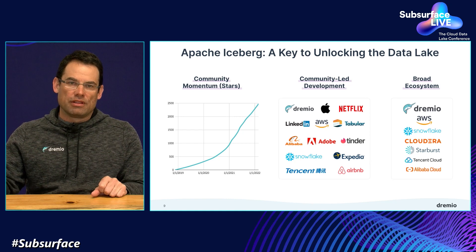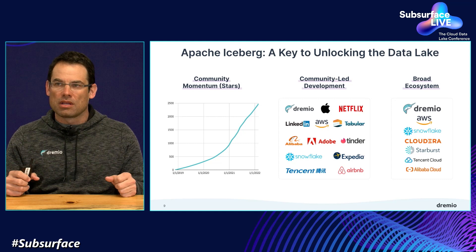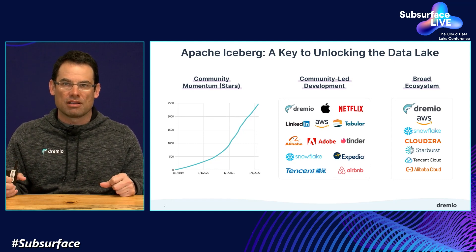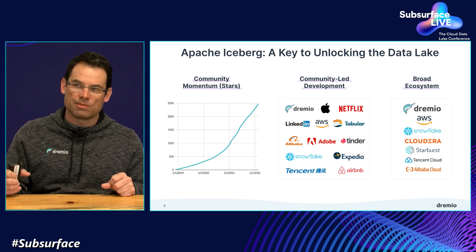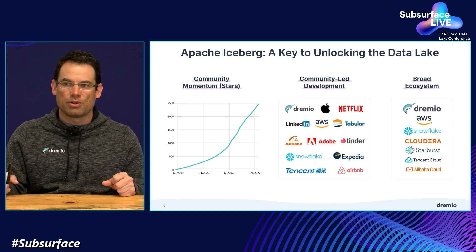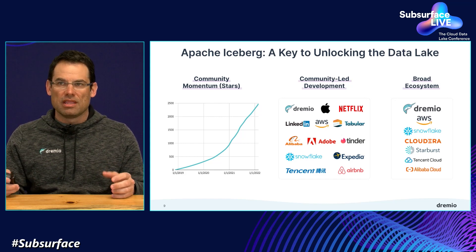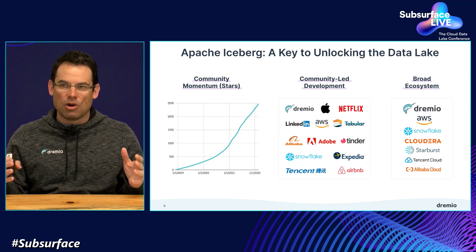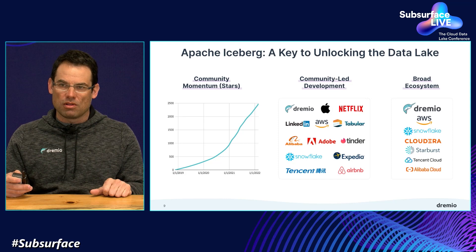Over the last few months, we've seen the entire ecosystem basically embrace Iceberg by adding support in their various products. AWS announced support in EMR and in Athena. Snowflake supports Iceberg. Cloudera supports Iceberg. Starburst supports Iceberg. Basically all the different clouds have now embraced Iceberg — because of both the technology in place and because it's an open standard. What everybody wants with data is an open standard that is an open-source project with contributors from many different companies and no risk of vendor lock-in.